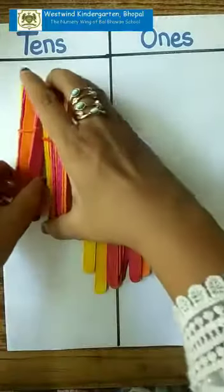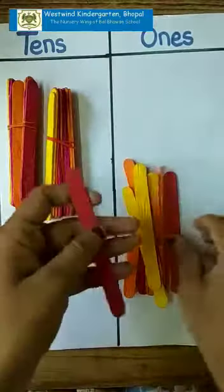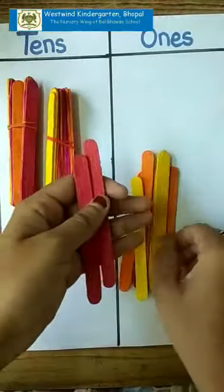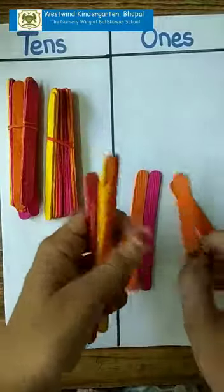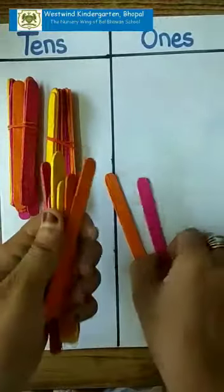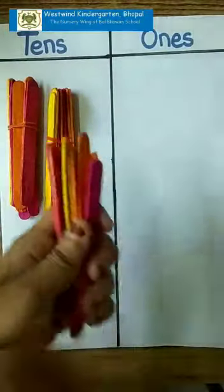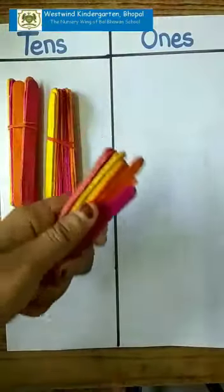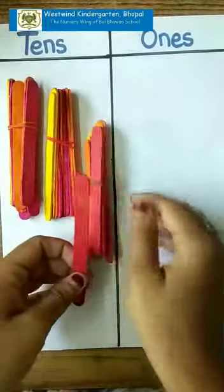Again, I will place it on the tens place. Now, let's count again 1, 2, 3, 4, 5, 6, 7, 8, 9 and 10. So this is 10, I have some sticks more. I will tie them over here and the one is remaining.